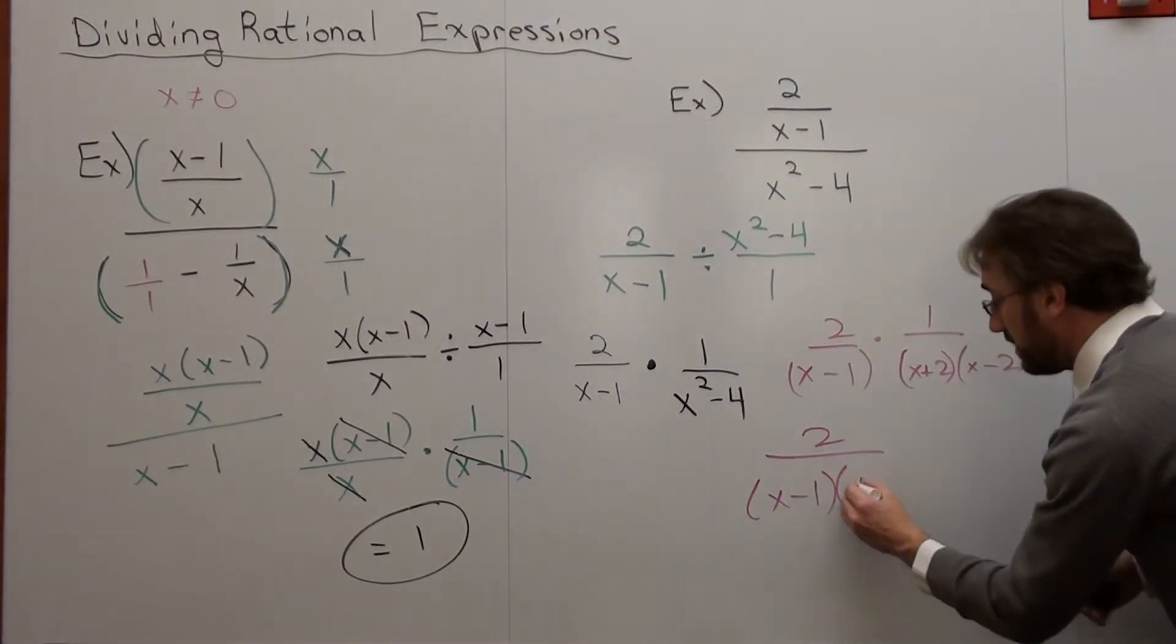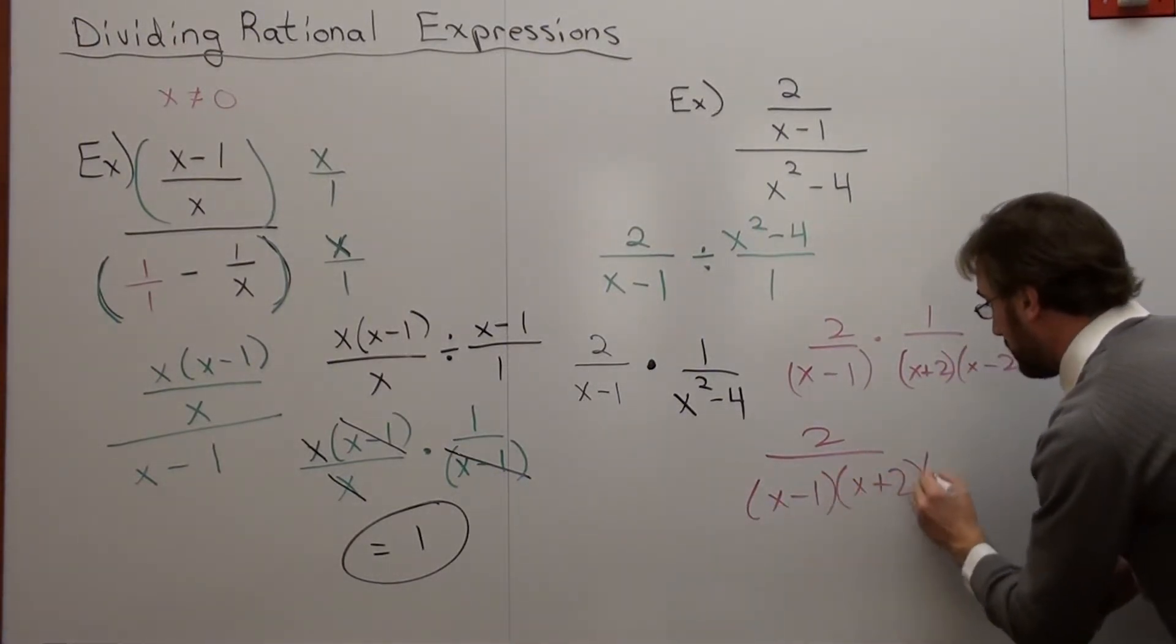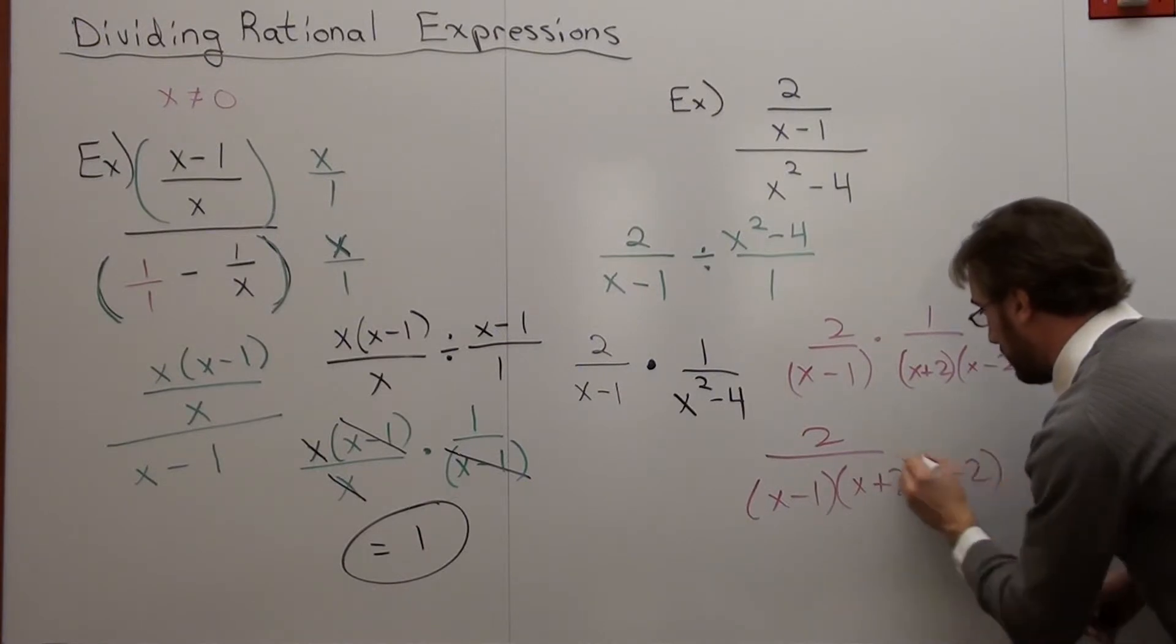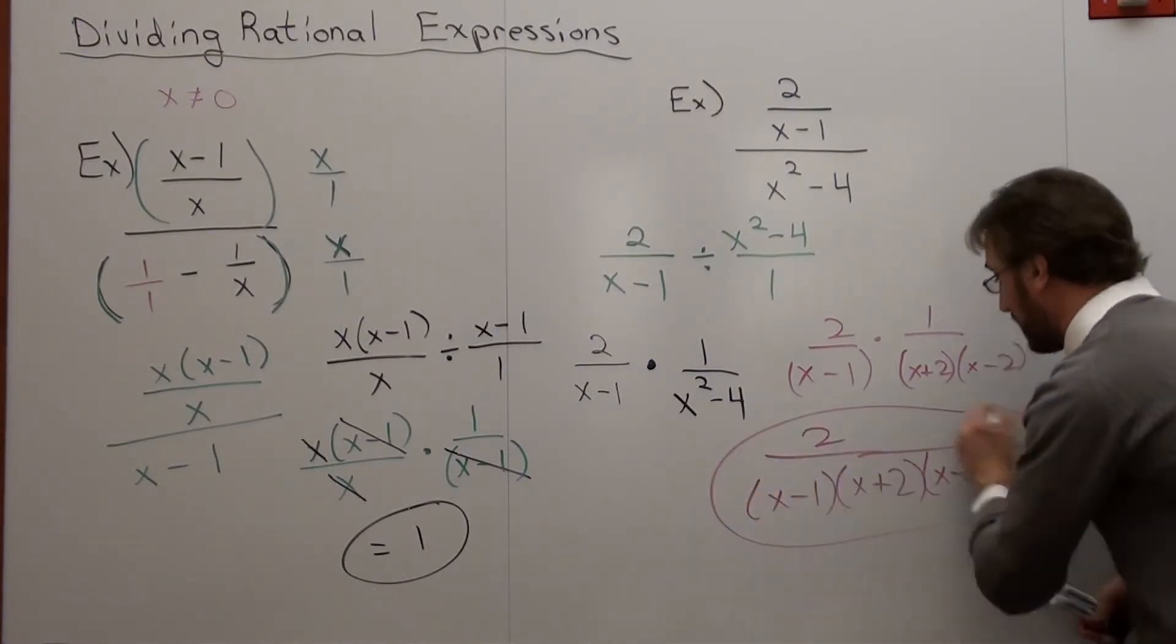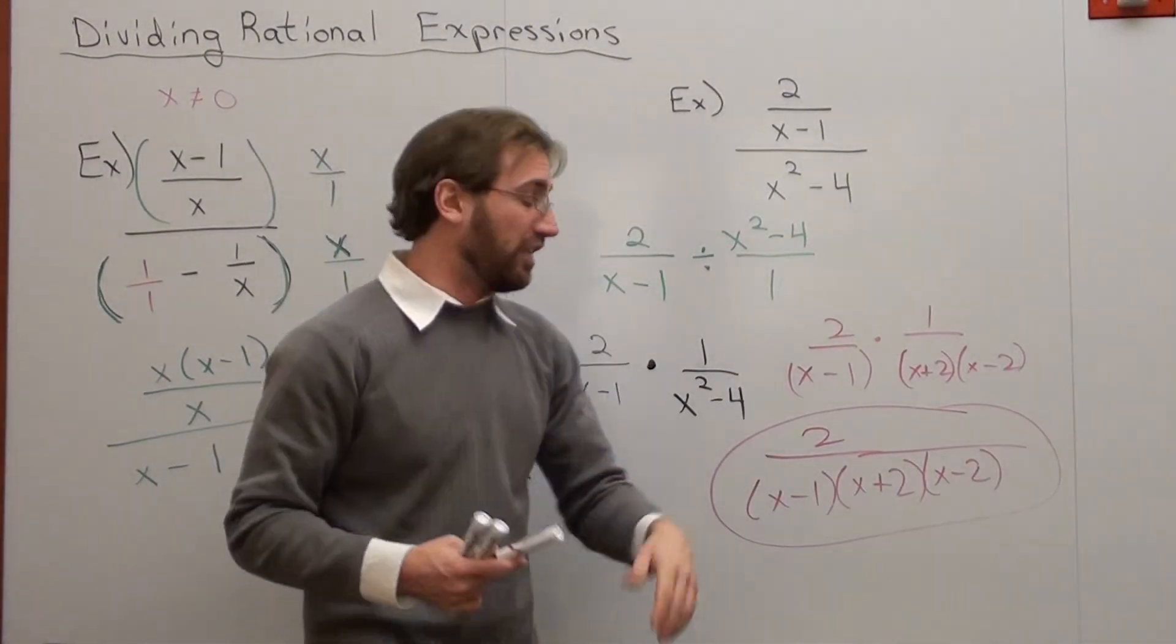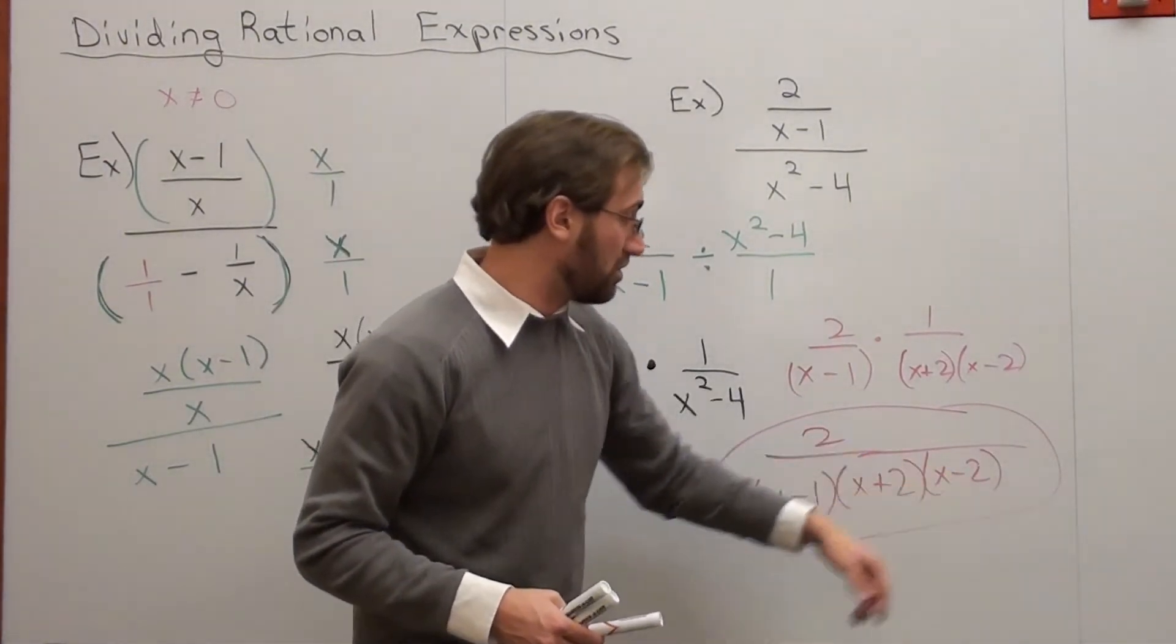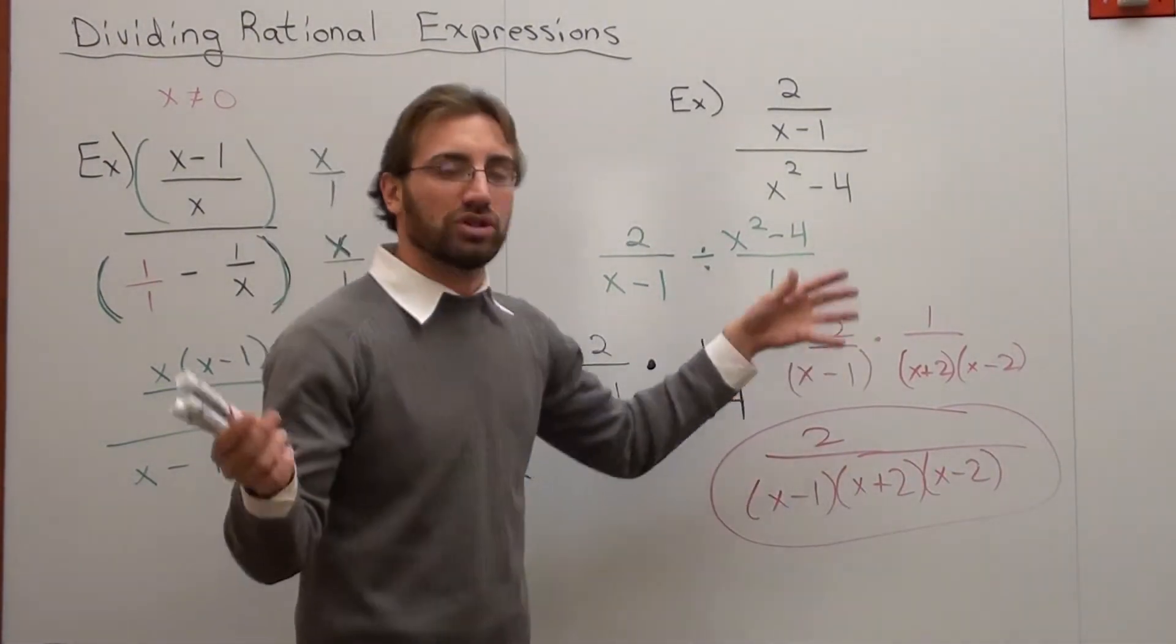And the reason why I would advise that very simply is when you get to more complex mathematics, it shows you where a graph is undefined. It's undefined at 1, negative 2, and 2. And you couldn't be able to tell if you just multiply them all together.